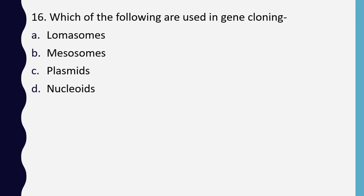Question 16. Which of the following are used in gene cloning? Lomasomes, mesosomes, plasmids, or nucleoids. Correct answer is option C: plasmids are used as vectors or carriers of genes in gene cloning.